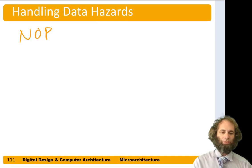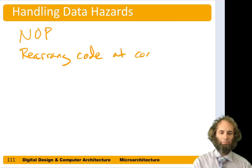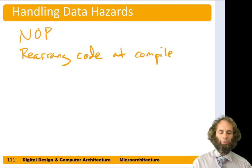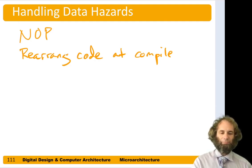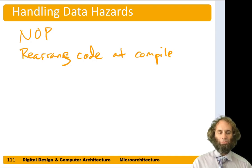Another possibility is to rearrange the code at compile time. For example, if we have this bit of code and then some completely unrelated code, we could bring that unrelated code forward and execute it while we're waiting for S8 to be ready, avoiding wasted cycles. A drawback is that in a different microarchitecture there might be a different latency between issuing an instruction and getting its result, so a compiler may not know the processor microarchitecture and might not be able to optimally rearrange the code.